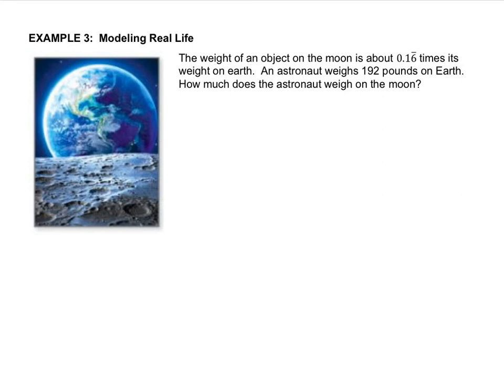The weight of an object on the moon is about 0.16 repeating times its weight on earth. So that decimal looks a little different because only one of the digits is repeating. So we'll look at that in a moment. An astronaut weighs 192 pounds on earth. How much does the astronaut weigh on the moon? So the way that we would find out how much the astronaut weighs is by just doing simple multiplication. We would do 192 times 0.16 repeating. But then the question is, how do you do 192 times 0.16 repeating? Well, you could use a calculator, but I'm going to show you how to do it without one.